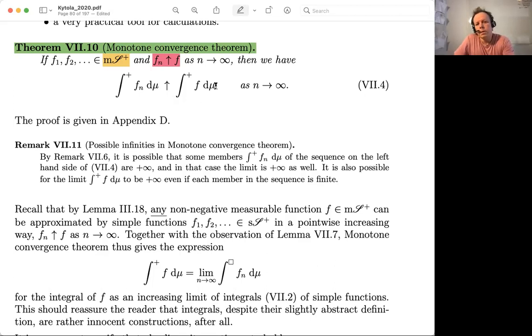And what is on the left, what is on the right, both of these things can be finite or infinite. Infinities are allowed in the monotone convergence setup.